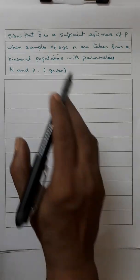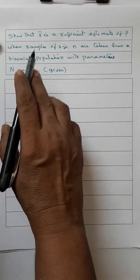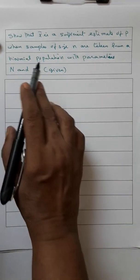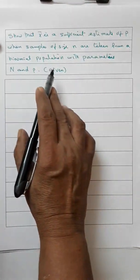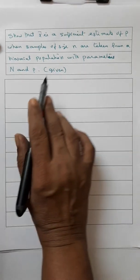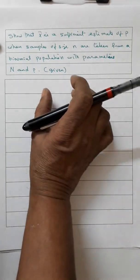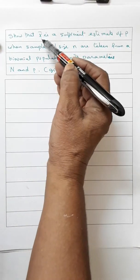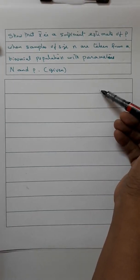If an estimator is sufficient for a parameter theta, we can rewrite the likelihood function of the samples, or joint probability density function of the samples, as a product of two functions: one is a function of the estimate and the parameter, and the other is independent of the parameter.